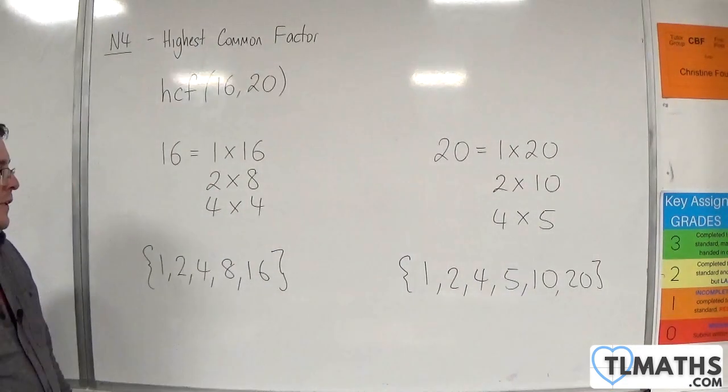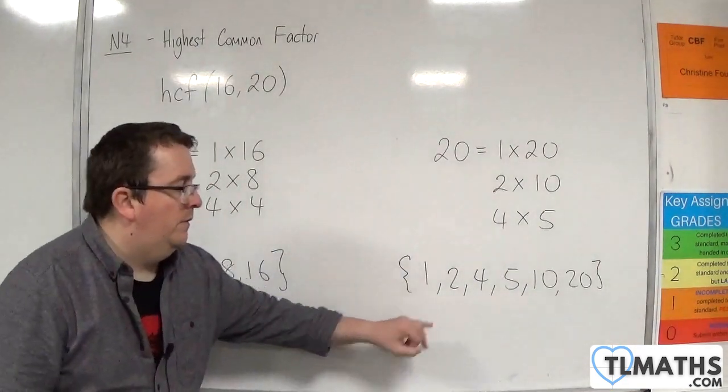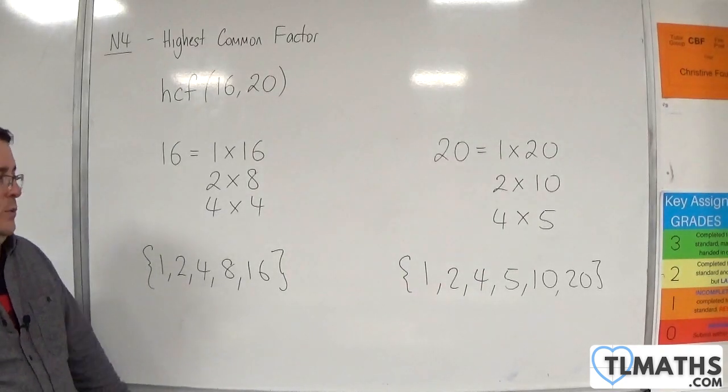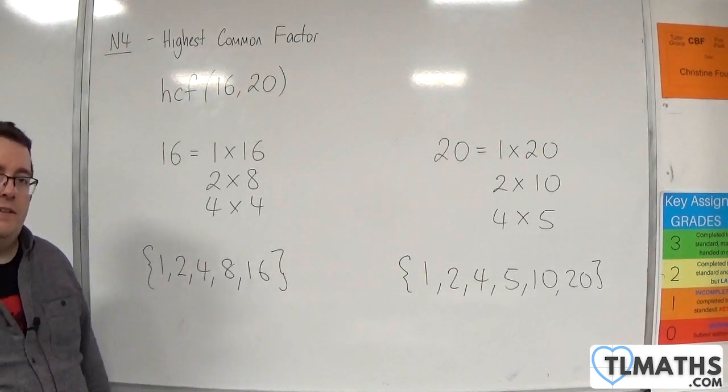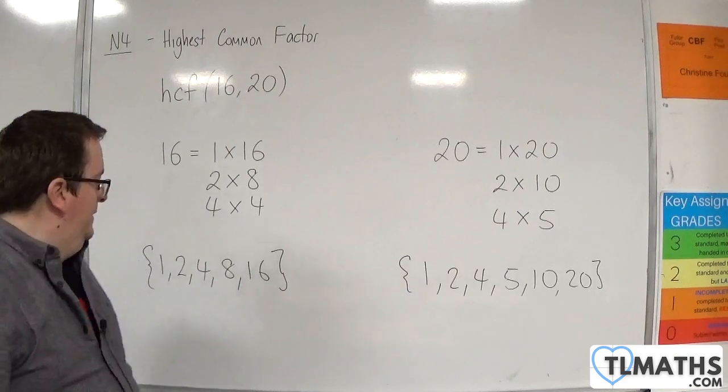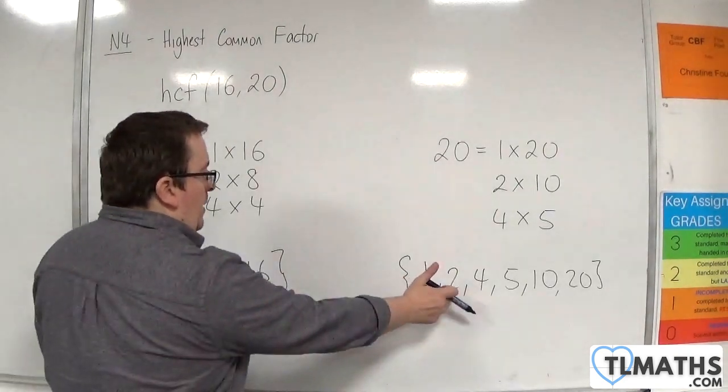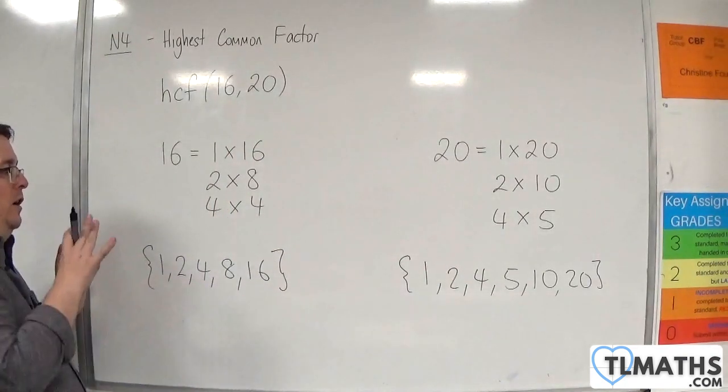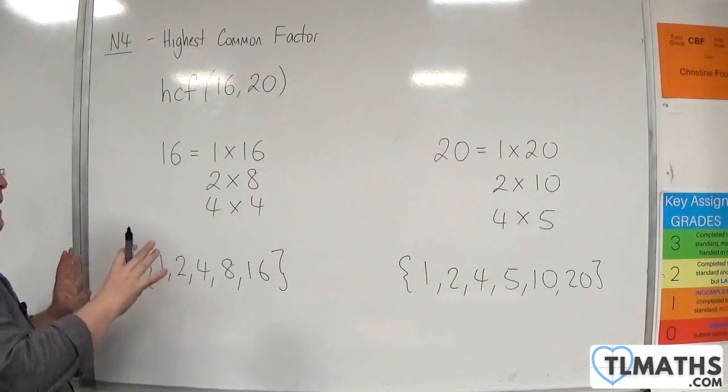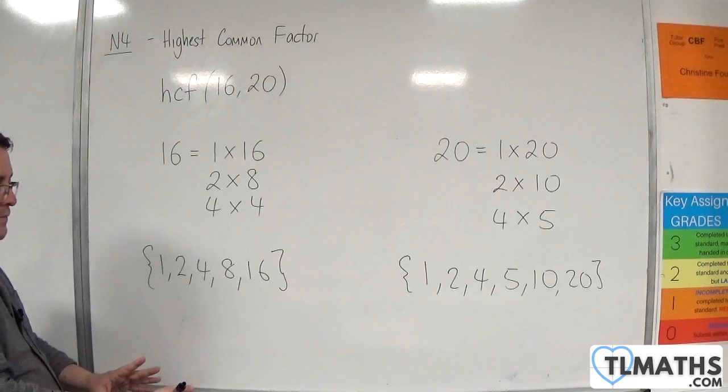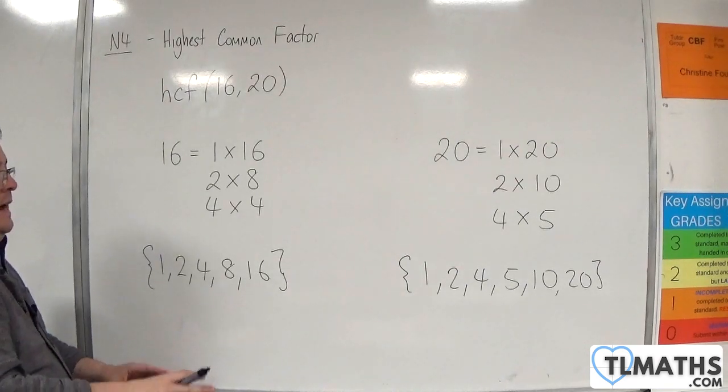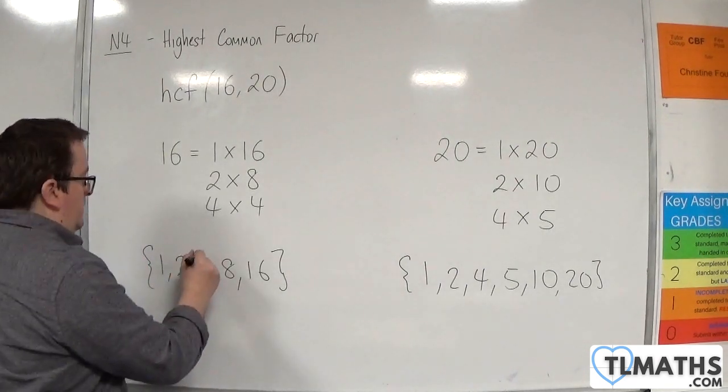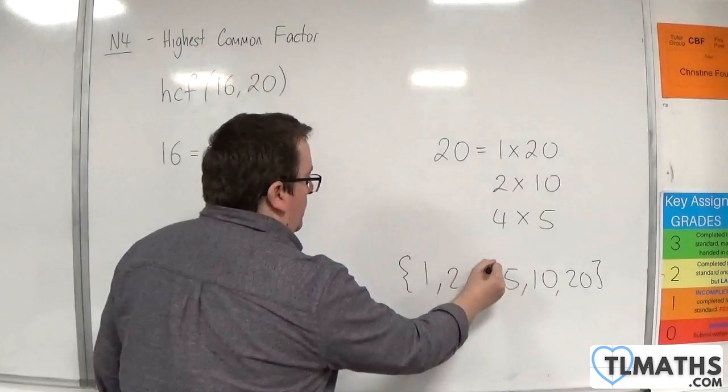You can see that 1 is in both lists. As you would expect, that would be the lowest common factor and not interesting. We've got 2 in both lists, and we've got 4 in both lists. So 1, 2, and 4 are common to both. They're the only ones that are common to both of these lists, and the highest common factor would be 4.